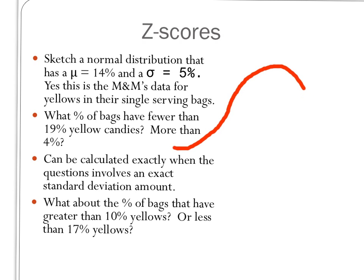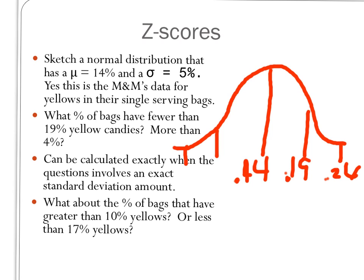And greater than 10% or fewer than 17%. So let's start by sketching the curve. So I'm going to draw a normal curve. And the mean is 14%, so put that in the middle. And two standard deviations to the right, two standard deviations to the left. I should be able to calculate these. So 0.19, 0.24, going to left would be 0.09 and 0.05. And now I can actually start to answer these questions.